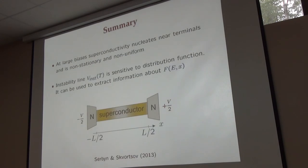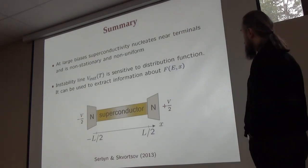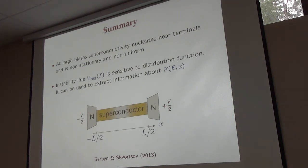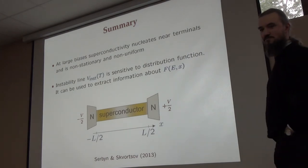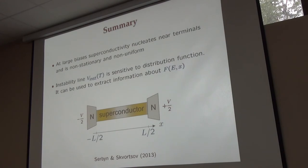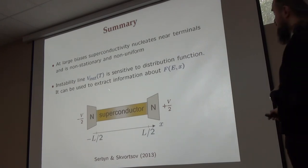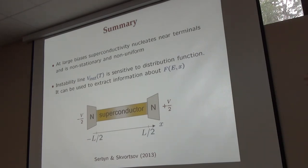To summarize: at sufficiently large biases, superconductivity nucleates close to the terminals, as obtained by Yivlev and Kapin. At low temperatures and short scales, this instability line is sensitive to the distribution function in the normal state, which in turn is sensitive to the relaxation mechanism. By measuring the instability line, you can get access to the mechanism of inelastic relaxation in the normal state.